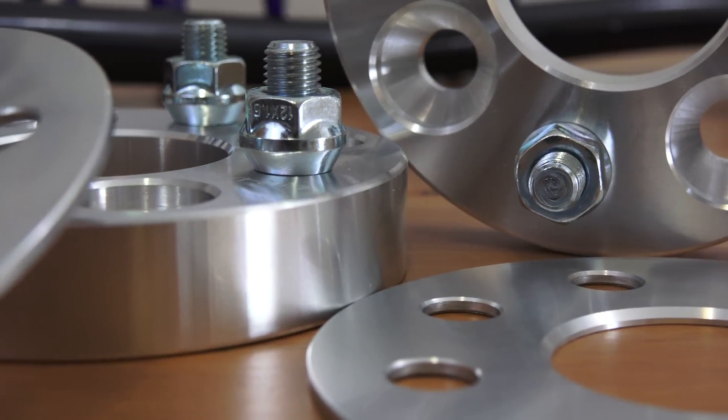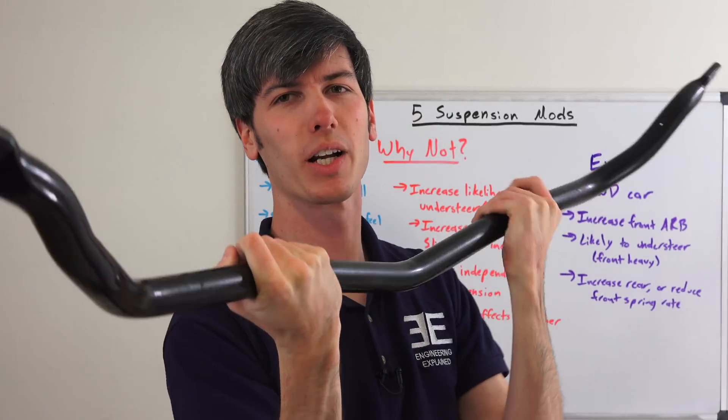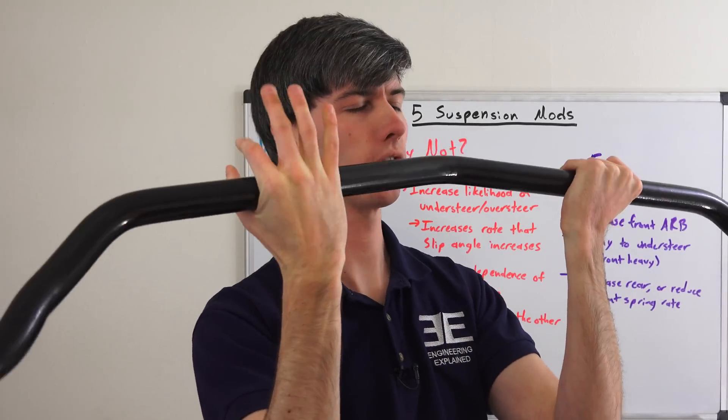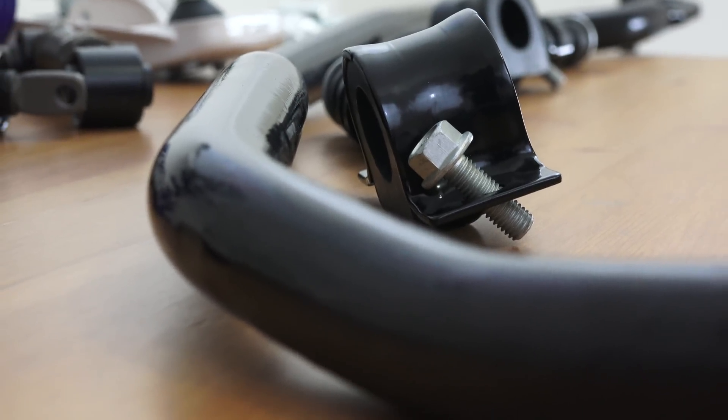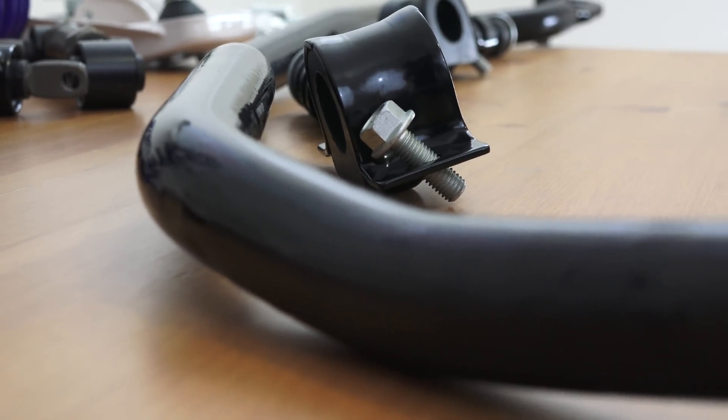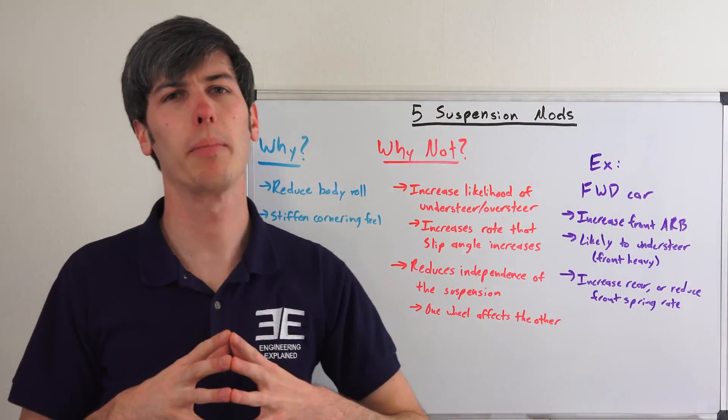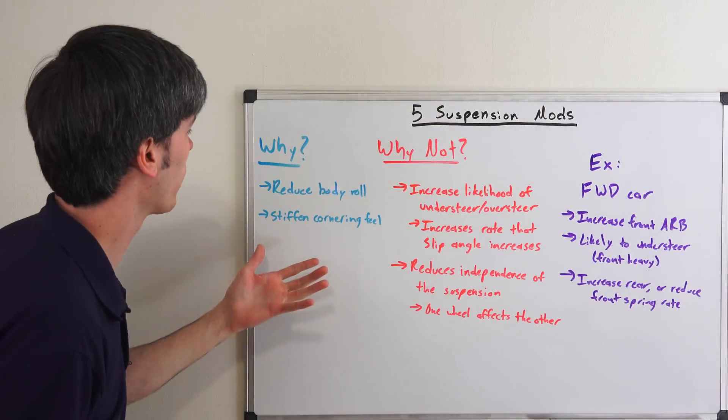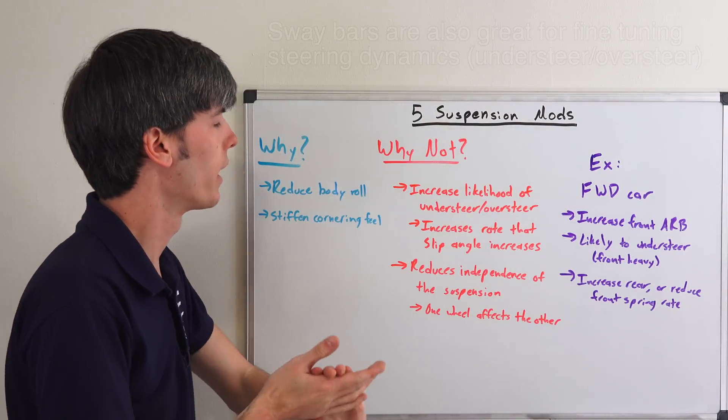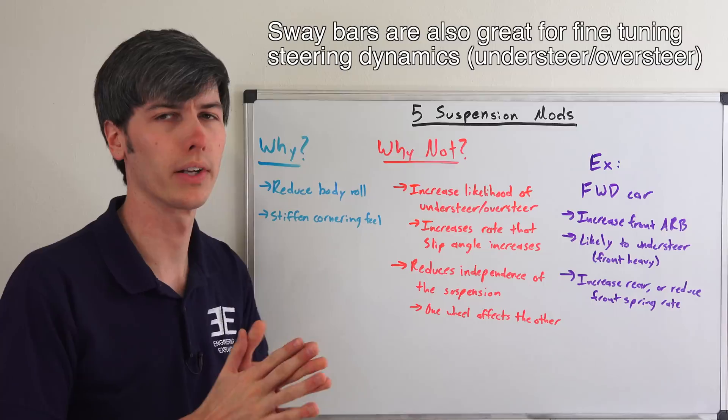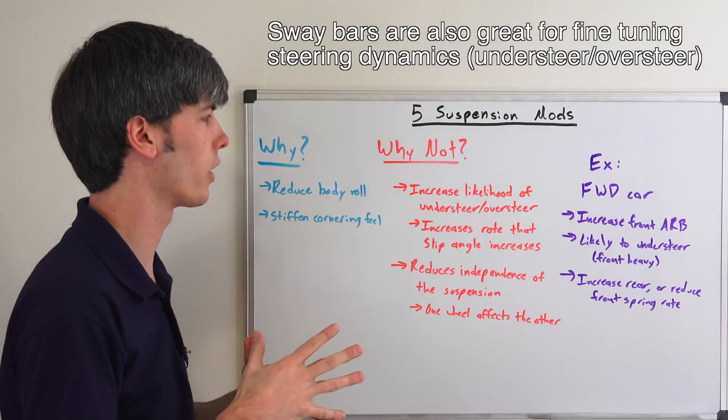And number five, we're going to be talking about beefy anti-roll bars like this guy here—solid steel, it is quite heavy. Why might you install a larger anti-roll bar? Well, you can reduce the amount of body roll for your car and you can stiffen up the cornering feel, so that can inspire some driver confidence.